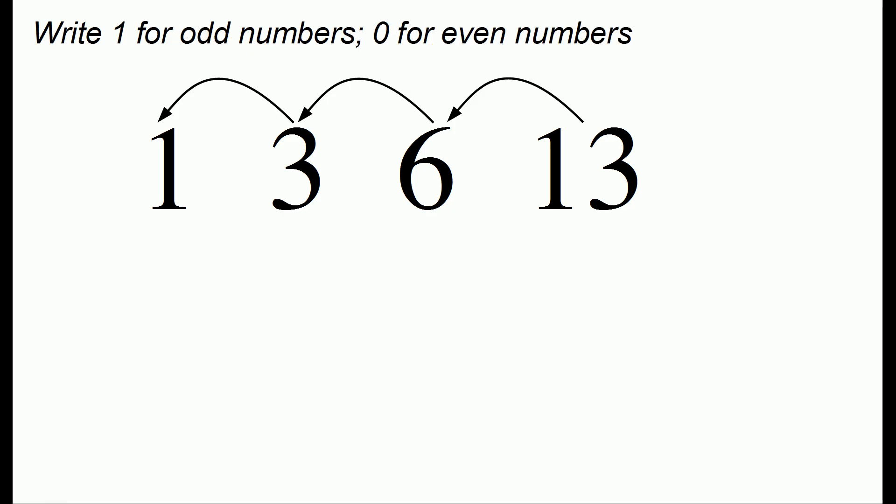Now what we're going to do is write a 1 below any of the numbers that are odd and a 0 below any of the numbers that are even. So the number 1 is odd, 3 is also odd, 6 is an even number, and 13 is an odd number.